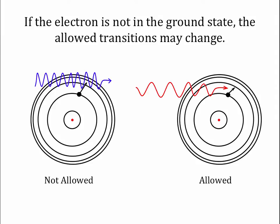If the electron is not in the ground state but already in an excited state, the allowed transitions may change. The same blue photon that was good enough to get the electron from the ground state to the second level would now put it between the third and fourth levels — in between levels is not allowed — so the electron allows that photon to pass right on by. In this case, the energy of the red photon is exactly right to cause the electron to jump from the second level to the third level, so the electron absorbs that photon, the photon ceases to exist, and the electron goes up to the third energy level.